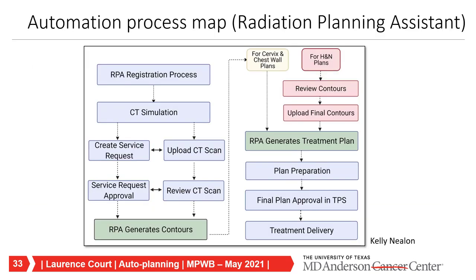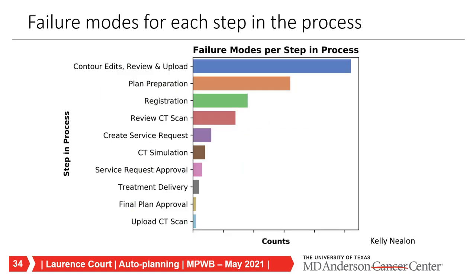When doing an FMEA analysis, you first map out your entire process. Our process map for a clinic using the RPA shows blue manual processes and green RPA automatic processes. Even though we've done a lot of automation, there are still many manual processes, approvals, and reviews. The team—radiation oncologists, physicists, dosimetrists, therapists, and developers—spent hours identifying all failure modes. The categorized results show that contour editing, review, and upload is one of the largest categories. It's not necessarily the most risky, but it has the most potential sources of error.